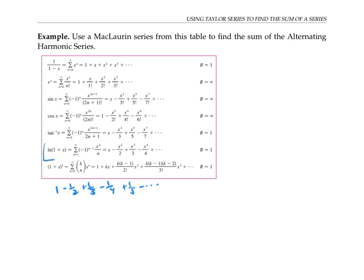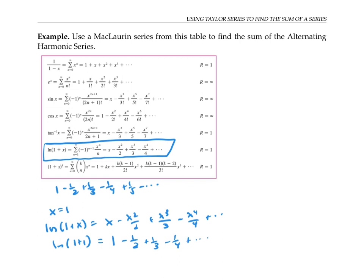Did you pick ln(1+x)? If we plug in x = 1 into the series for ln(1+x), we get that ln(1+1) = 1 - 1/2 + 1/3 - 1/4 + ..., exactly the alternating harmonic series. So our conclusion is the alternating harmonic series converges to exactly the value of ln(2).